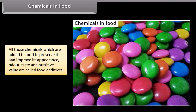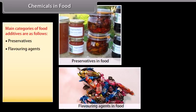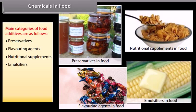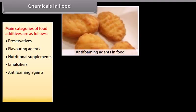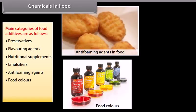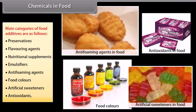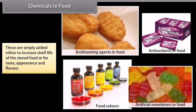Chemicals in food: all chemicals added to food to preserve it and improve its appearance, odour, taste, and nutritive value are called food additives. Main categories include: preservatives, flavouring agents, nutritional supplements, emulsifiers, anti-foaming agents, food colours, artificial sweeteners, and antioxidants. These are added either to increase the shelf life of stored food or for taste, appearance, and flavour.